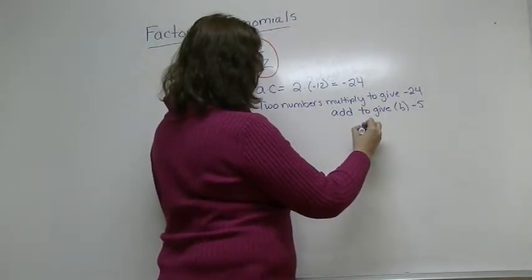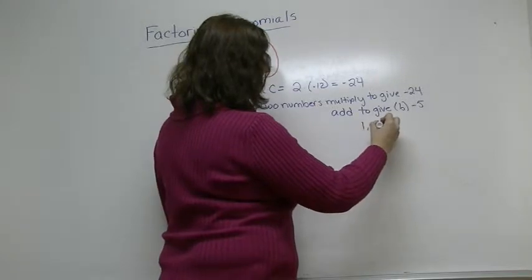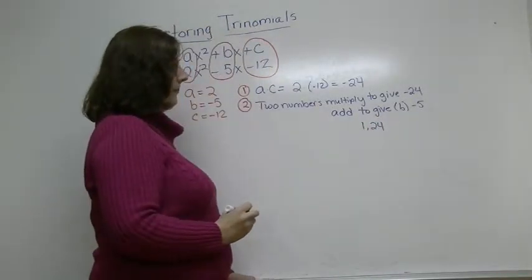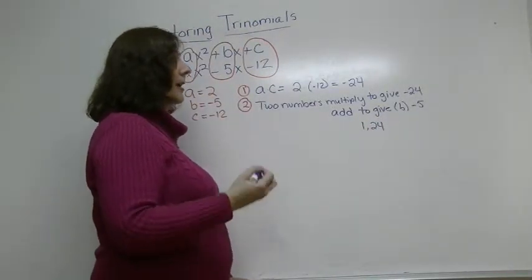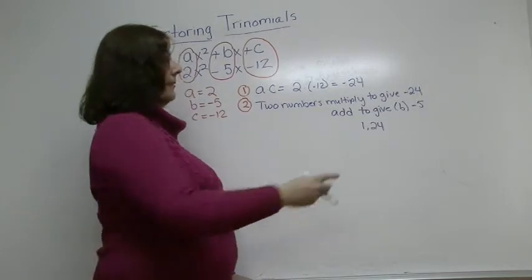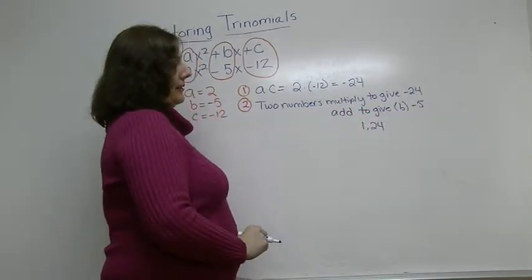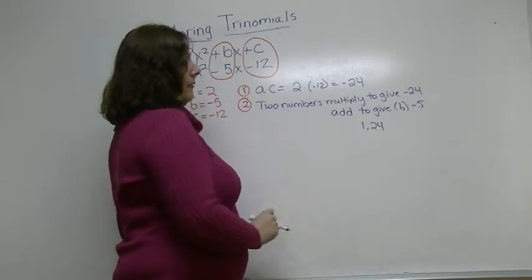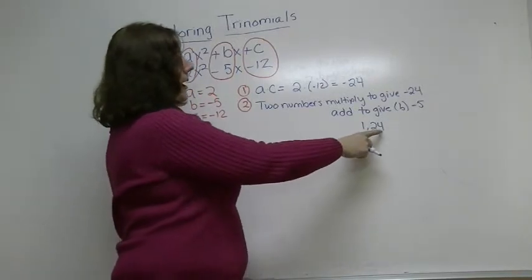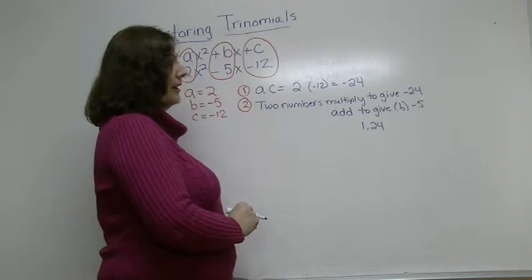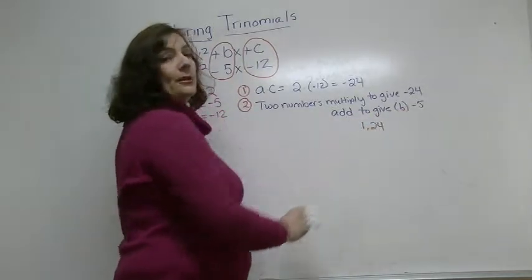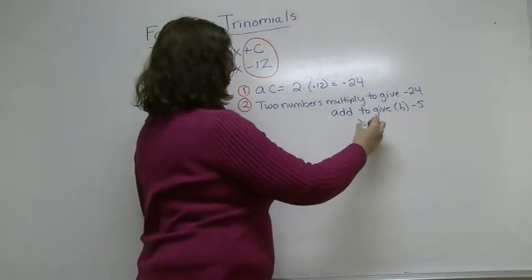So if I think about what multiplies together to give me 24, 1 times 24. Then I usually add and subtract them and I see if I get a number that looks like this. If I add them, 1 plus 24, I get 25. If I subtract 24 minus 1, I get 23. Neither of which is a 5, so that one's not going to work.